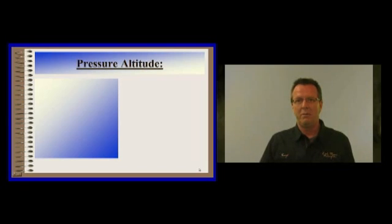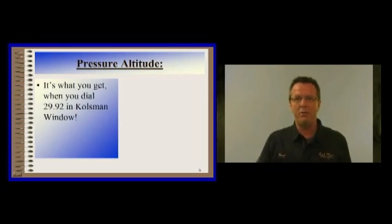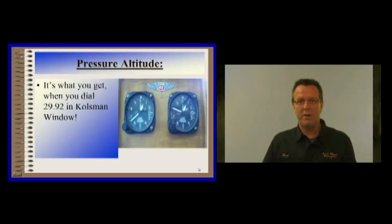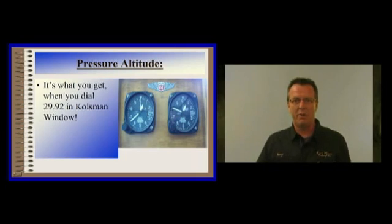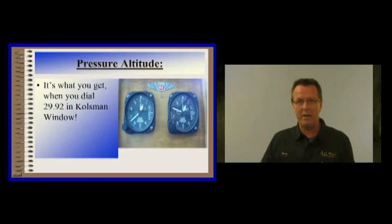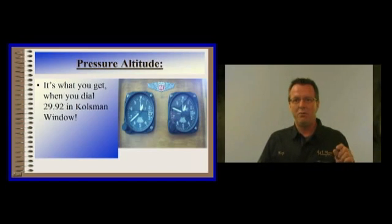What is pressure altitude? Pressure altitude is what you get when you dial 29.92 in your Kollsman window. If you look at the diagram here, we went downstairs the other day because a student asked what the Kollsman window is. We took a photo and brought it upstairs to make sense of this. Your altimeter on the right has the barometric pressure setting for the day, which shows the field elevation of 800 feet. In the other altimeter, we set in 29.92 and you read pressure altitude directly off that.